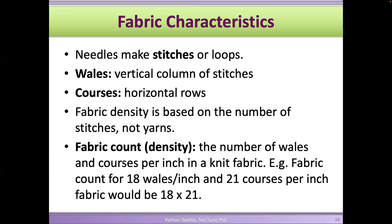Needles make the stitches or loops, and we have wales and courses in knit fabrics — similar to warp and weft yarns in woven fabrics. Wales are the vertical columns of stitches or loops; courses are the horizontal rows of loops. Fabric density is based on the number of stitches or loops, and we count it based on the number of wales and courses in one inch.